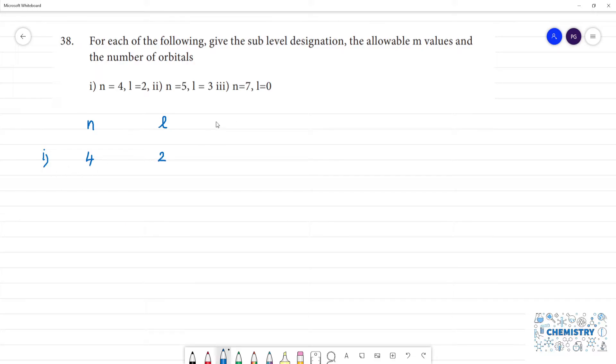Now we have m value equal to number of orbitals. This will tell us the total number of orbitals. Now we know that if n value is given, then l value is 0 to n-1. m value is minus l to plus l.